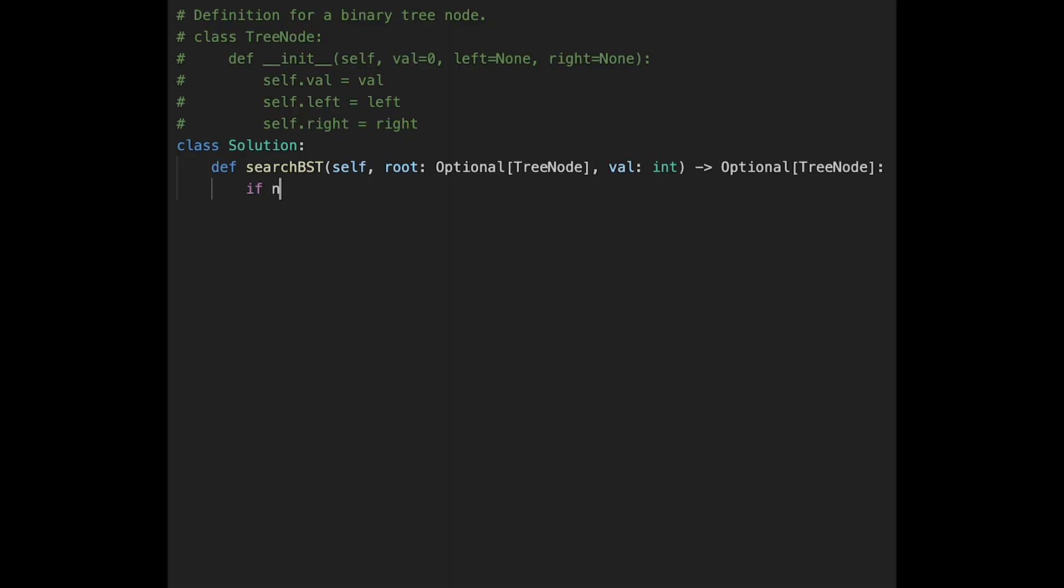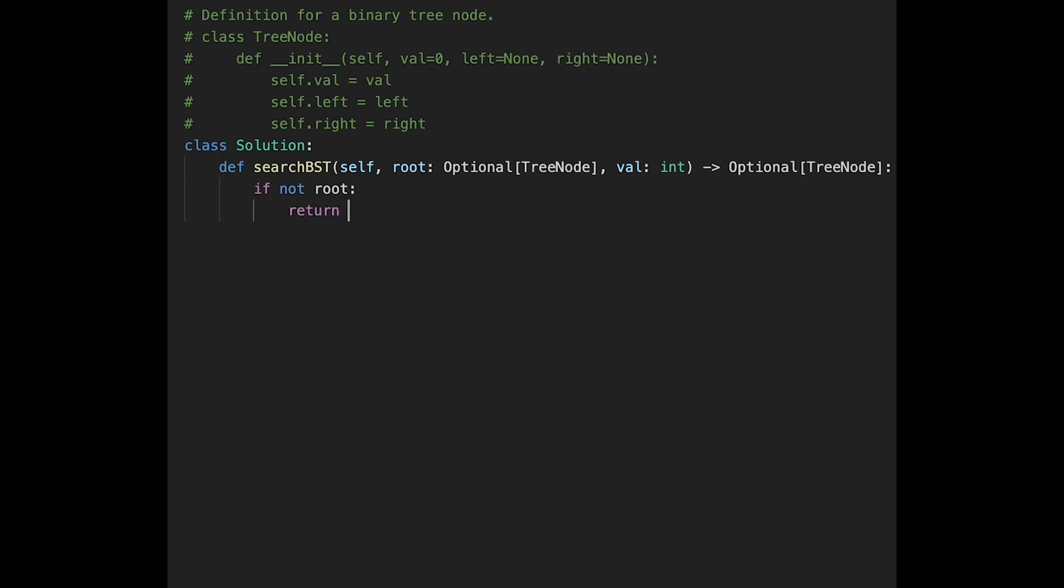First of all, if not root, this is a base case. In this case, return None. And if not the case, if root value equals the value we are trying to find, in this case, return the root node.